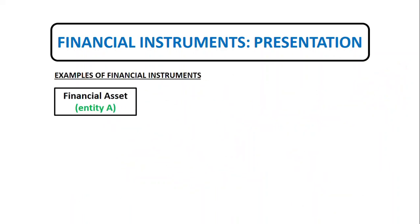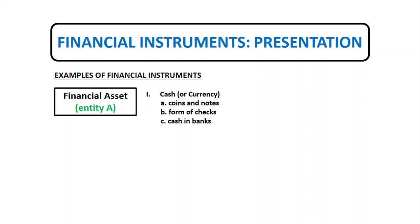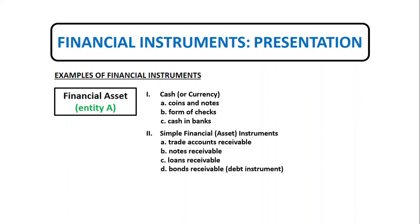A financial asset is defined by IAS 32 as cash, an equity instrument of another entity, or a contractual right to receive cash or another financial asset from another entity. Examples of financial assets include cash itself — such as coins and notes — cash in the form of checks like traveler's checks, manager's checks, cashier's checks, and commercial checks, as well as cash in banks such as time deposits, savings deposits, demand deposits, and checking deposits. We also have simple financial instruments like trade accounts receivable, notes receivable, loans receivable, and bonds receivable, since these fall under the definition of a contractual right to receive cash or another financial asset from another entity.